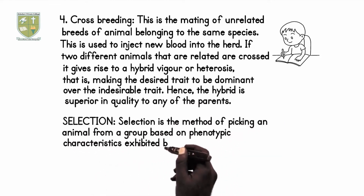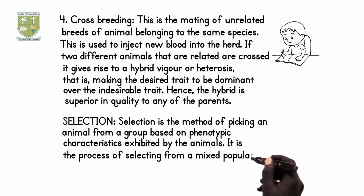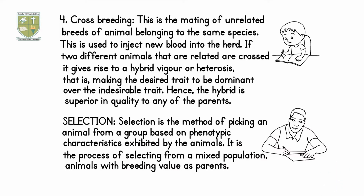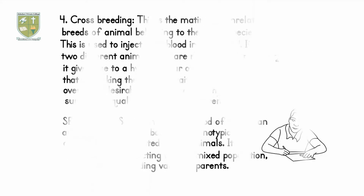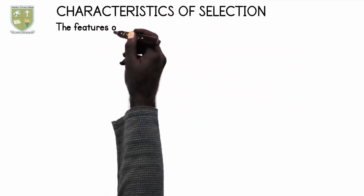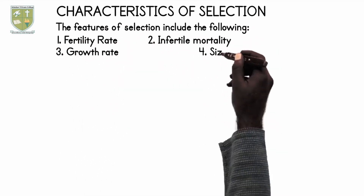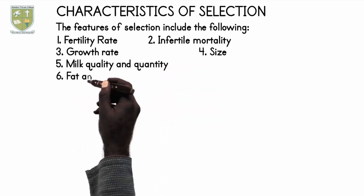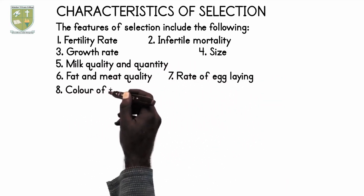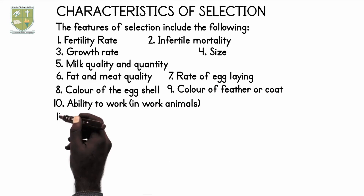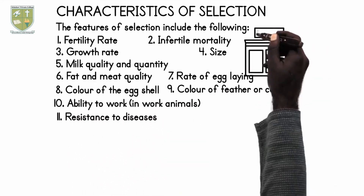4. Selection: Selection is the method of picking an animal from a group based on phenotypic characteristics exhibited by the animals. It is the process of selecting from a mixed population animals with breeding value as parents. The features of selection include the following: 1. Fertility rate, 2. Infertile mortality, 3. Growth rate, 4. Size, 5. Milk quality and quantity, 6. Fat and meat quality, 7. Rate of egg laying, 8. Color of the eggshell,